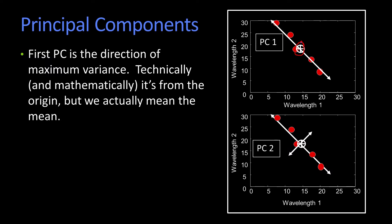We have to do it in the math, but we would draw something like this and say, you see this direction, that's the first principal component of those points, it's the direction of maximum variance.